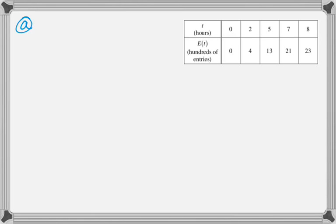E of t has weird units, it's hundreds of entries. So like when t is equal to two, the value of E of t is four, that is four hundreds of entries. And I'm going to say it that way all the way through. So I'm not going to say 400, I'm going to say four hundreds of entries, because it's just the easiest way to deal with it.